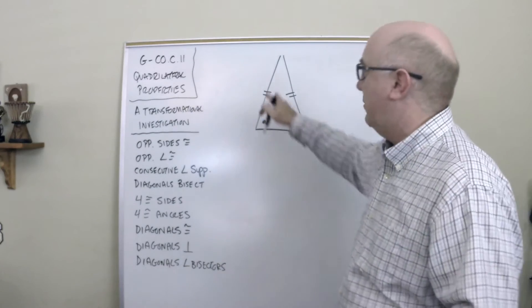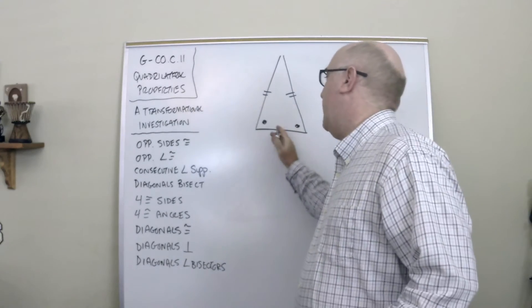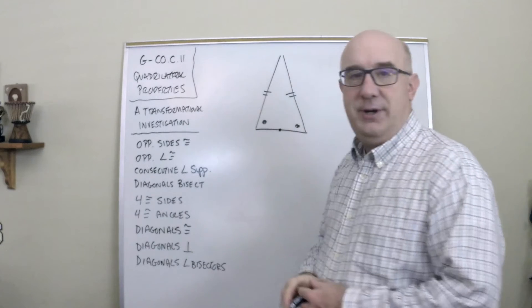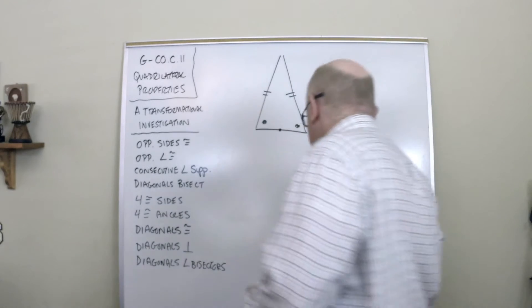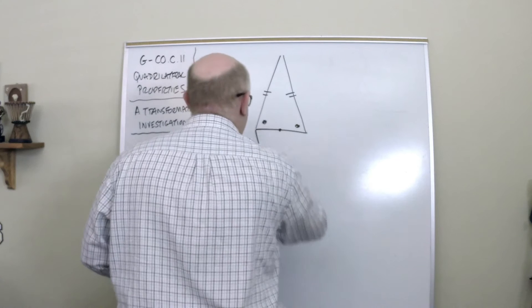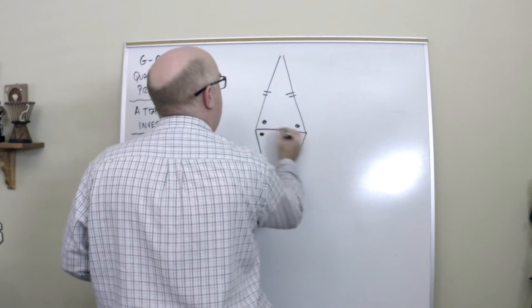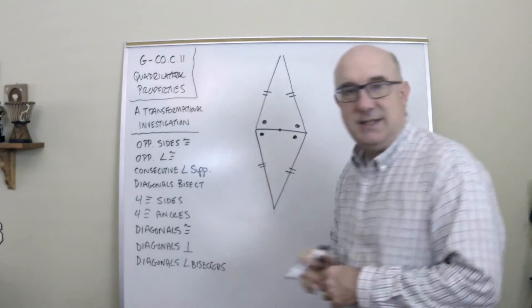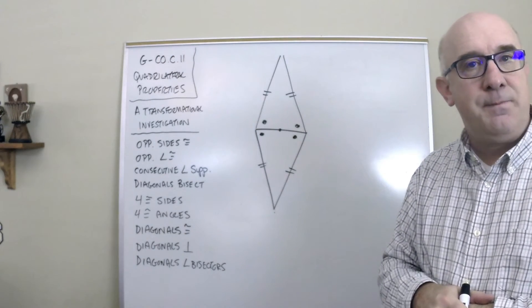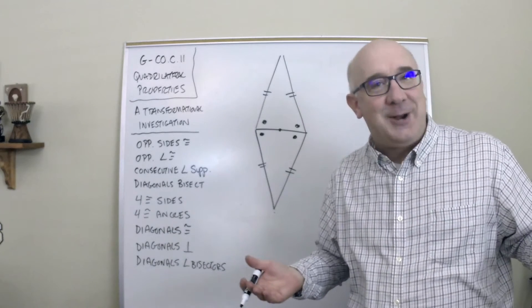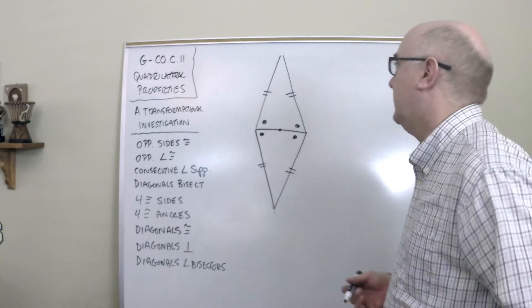Now if I wanted to make a quadrilateral, I might rotate this about this midpoint 180 degrees, and what it would do is form a congruent triangle, and it would place itself something like this.